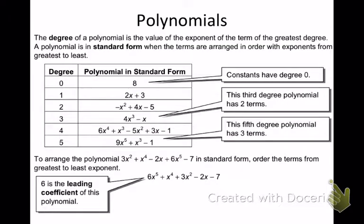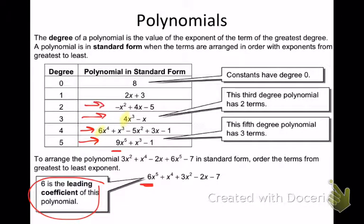Here's another table — same information. You're looking at the degree, which is the highest exponent. We have constant, linear, quadratic, cubic, quartic, and quintic. Leading coefficient is the first coefficient of the highest degree. In the quintic example, what's the leading coefficient? Nine. In the cubic, the leading coefficient is four. On the quadratic term, negative one. And degree of one — leading coefficient is two.